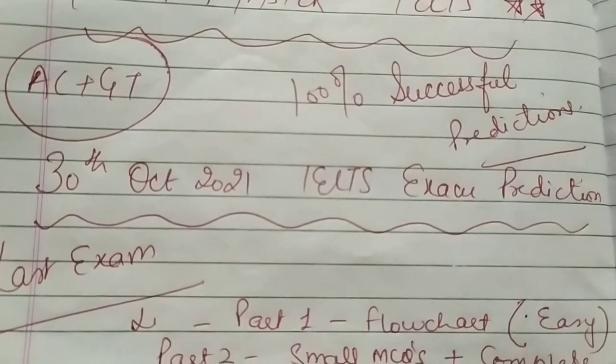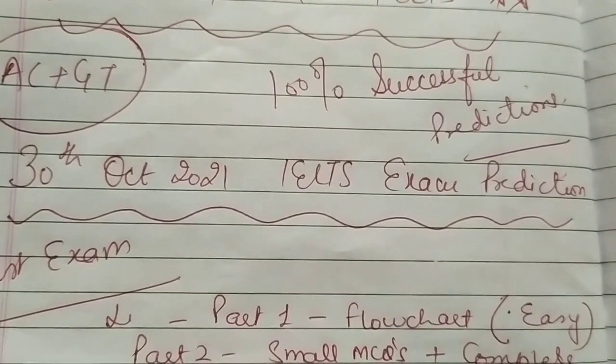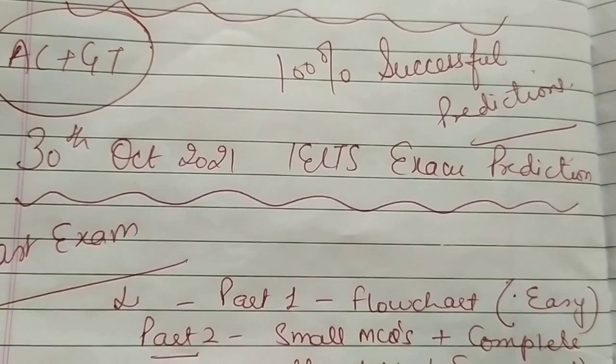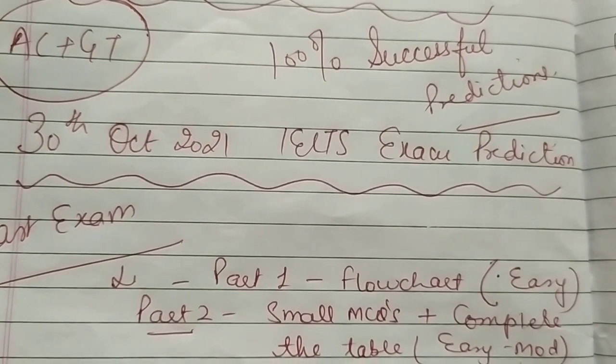Listening part one will have a flow chart, this time it could be one word answers and it could be easy. Part two will be small MCQs plus complete the table and it will be of easy to moderate level.